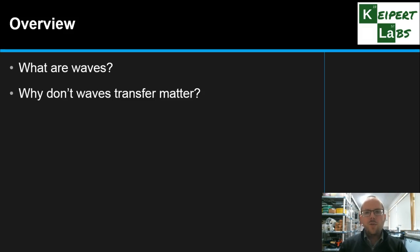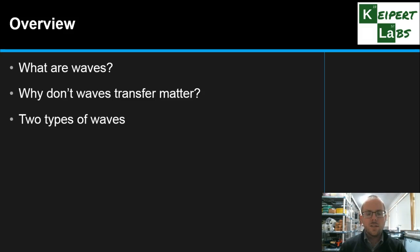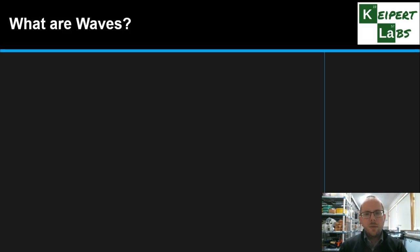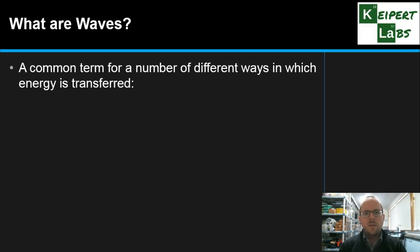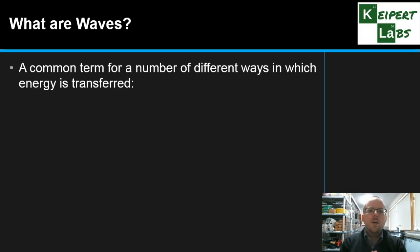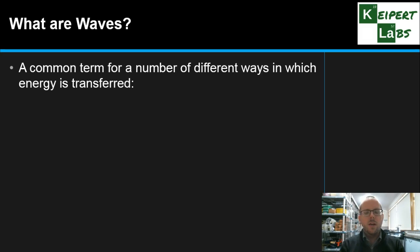We'll be thinking about why waves don't transfer matter and why we think about them only in terms of transferring energy. We'll also look at the two main types of waves that scientists discuss. When we define waves, we're using it as a term or a concept for the different ways in which energy can be transferred from point A to point B, from this place to that place.